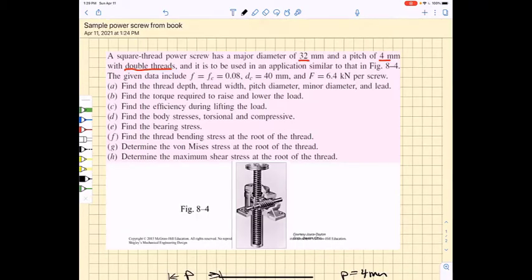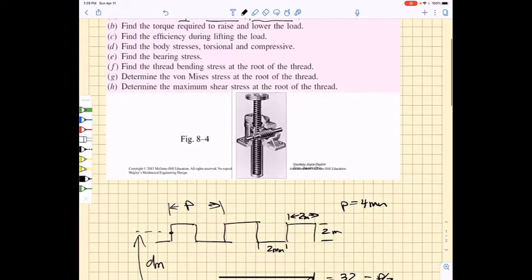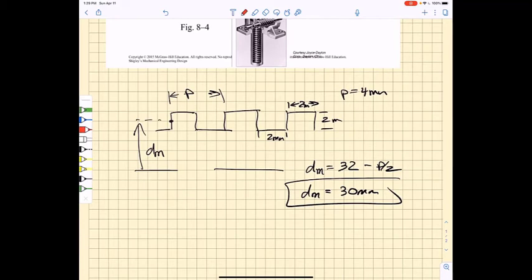We've already talked about the thread depth, which is P over 2, that's 2 millimeters. The thread width is 2 millimeters. The pitch diameter, that's that mean diameter, is 30. Now the minor diameter is going to be the diameter associated with the base of the teeth, so the minor diameter equals the major diameter which is 32. We subtract the pitch from that, so we subtract 4 from it, and we get that the minor diameter is 28 millimeters.